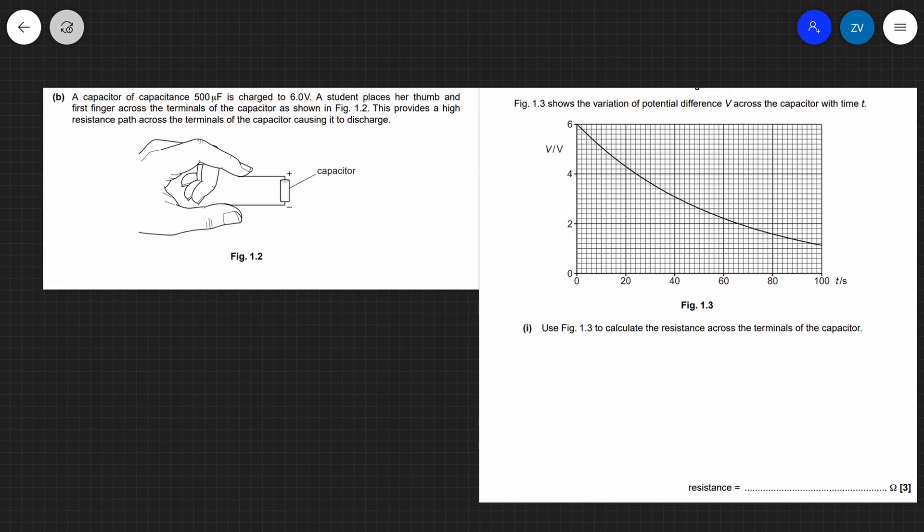Let's apply what we have learned so far to a past paper question. We have a capacitor of capacitance 500 microfarad charged up to 6 volts and then it's discharged by a student by placing her thumb and first finger across the terminals of the capacitor. We have a graph of voltage against time. This is quite a typical past paper question so we need to make sure that we go through this one carefully. Use the voltage against time graph to calculate the resistance across the terminals of the capacitor.